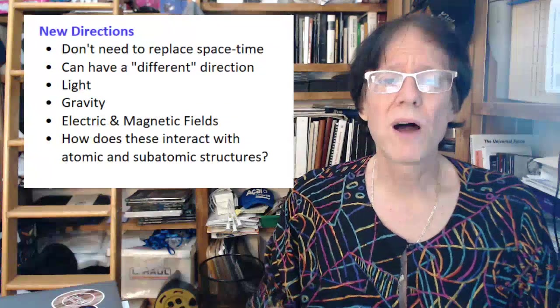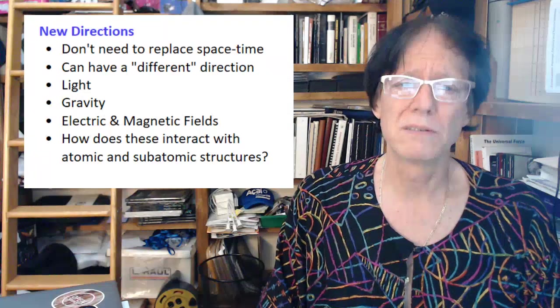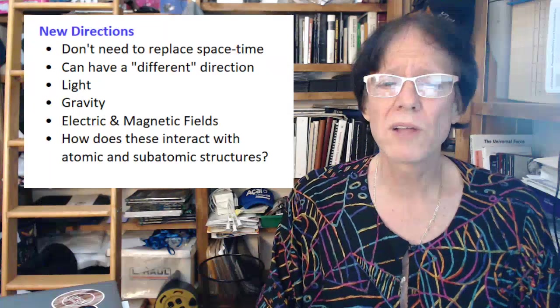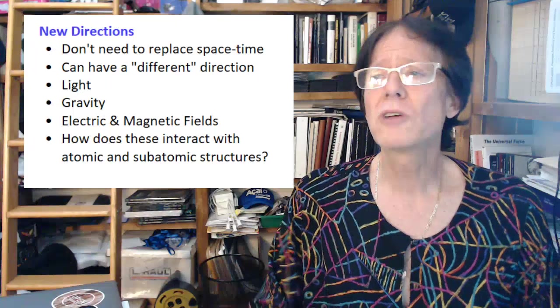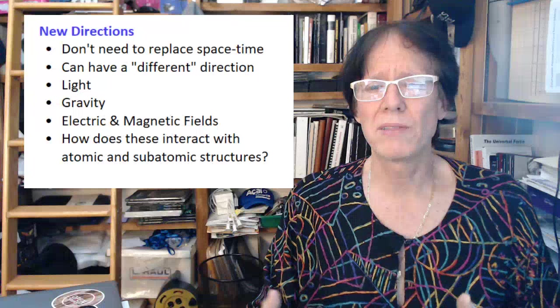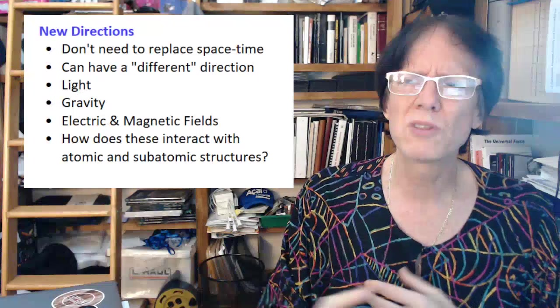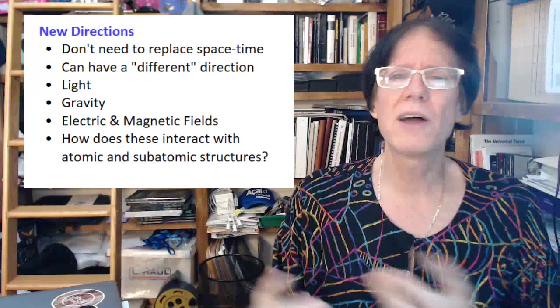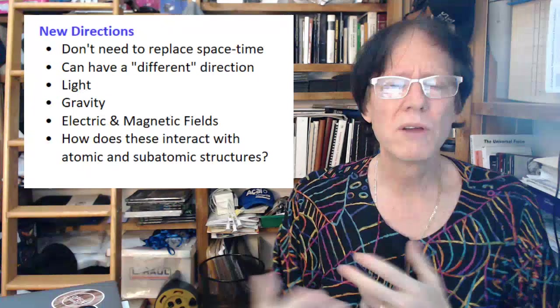So maybe the problem is we need new directions. We don't necessarily need to replace it. We don't need to replace relativity. We can throw special relativity and general relativity right out the window because our models don't need it. That's an extra complication that was invented. We know the problems with it. We identify those problems, fix those problems, and have new models. We have new directions, completely new.